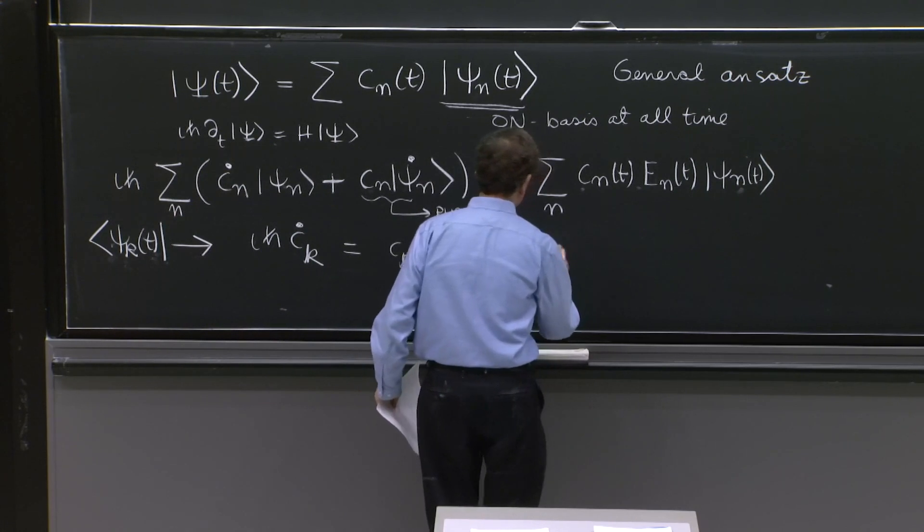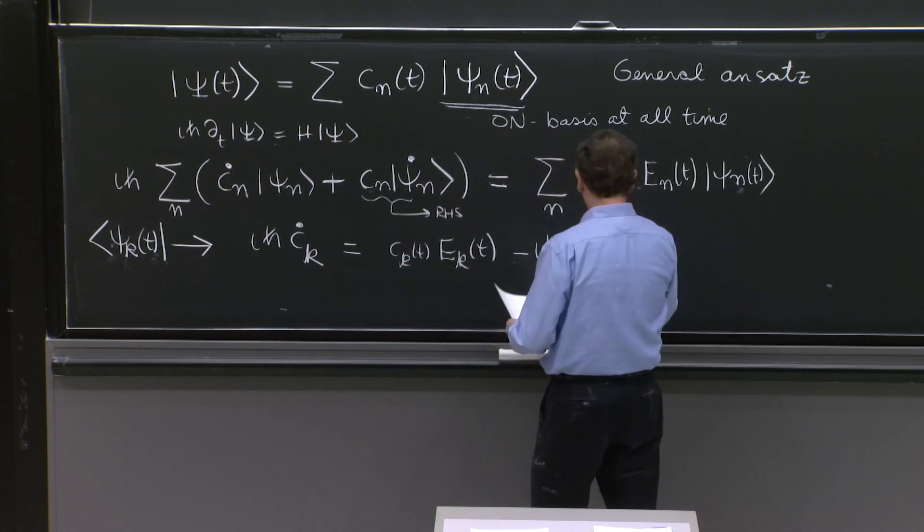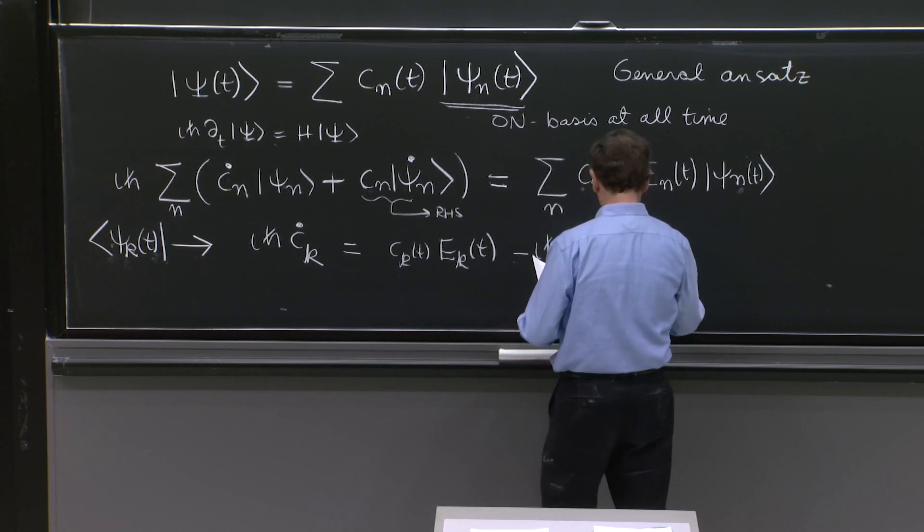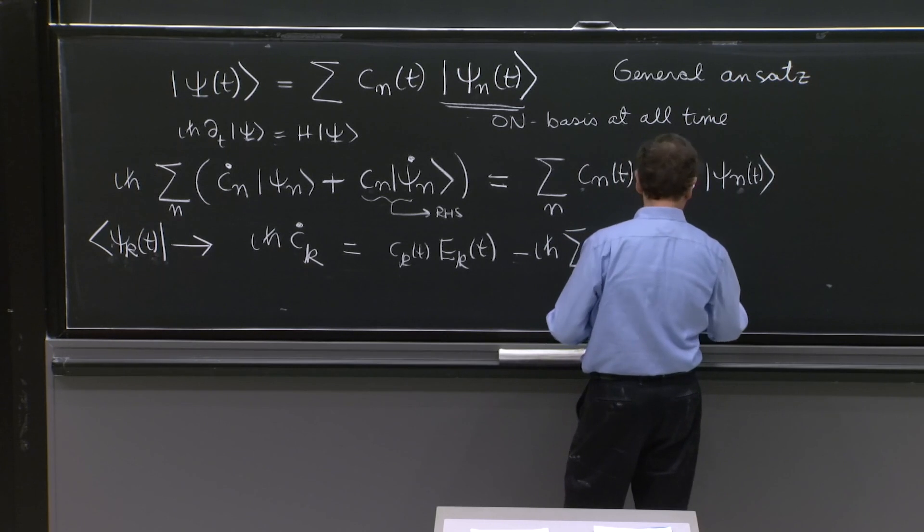Psi n dot is more complicated. So what do we get here? Minus i h bar the sum over n, psi k psi n dot inner product cn.